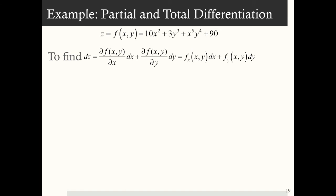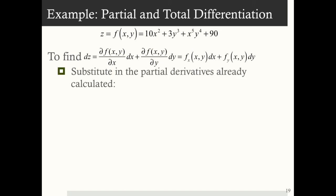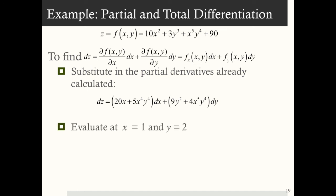And finally, let's find the total differential dz. We substitute in the partial derivatives already calculated: dz equals the partial derivative with respect to x times dx plus the partial derivative with respect to y times dy. Evaluating at x equals 1 and y equals 2, the total differential is dz equals 100 dx plus 68 dy.